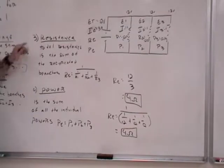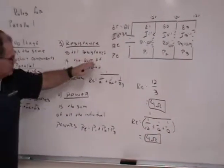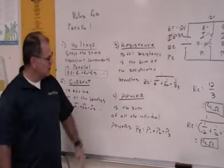So that's the rule for resistance. Total resistance is the sum of the reciprocated branches.